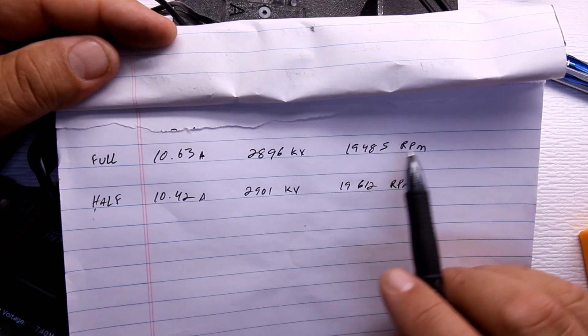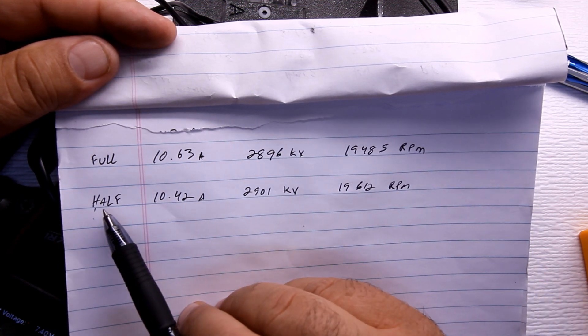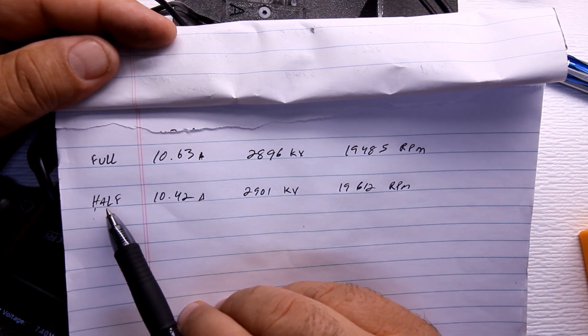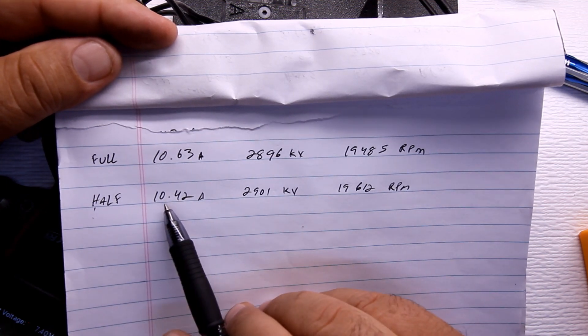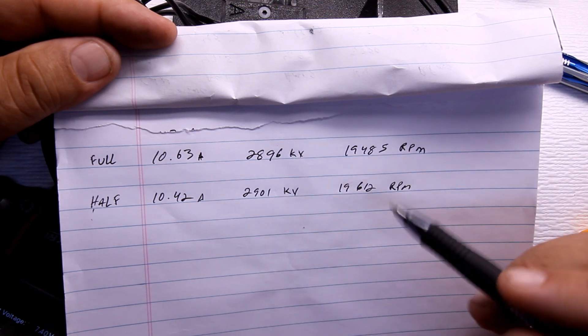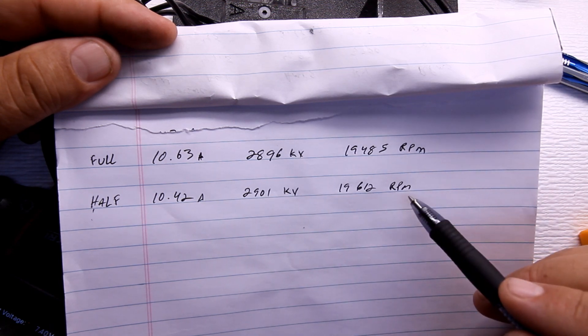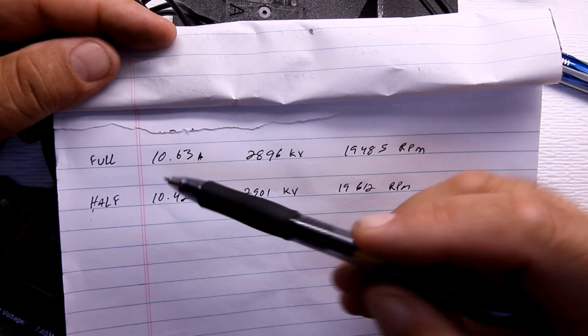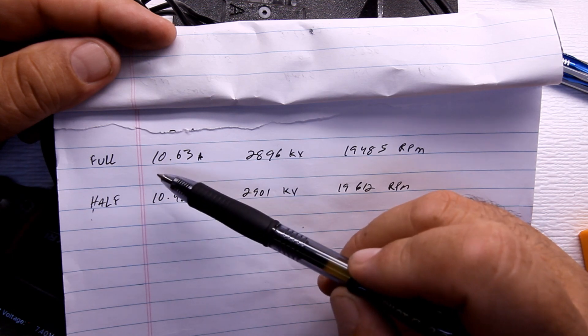Second run, half the pinion gear contact: 10.42 amps, 29.01 kV, 19,612 RPMs. So does it make a difference, full contact or a thinner pinion gear? Absolutely, it does make a difference.